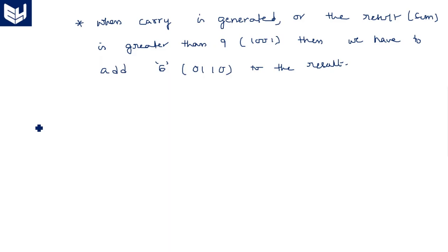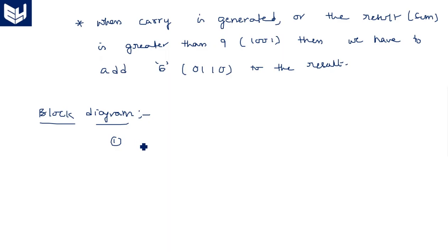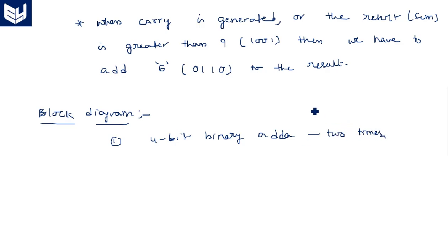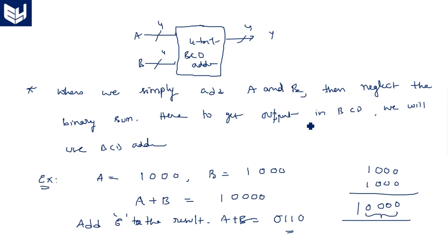Now let us see the block diagram. The block diagram consists of two 4-bit binary adders. We use two 4-bit binary adders: the first one adds the original inputs A and B. For addition of the two inputs A and B, we need a 4-bit binary adder.